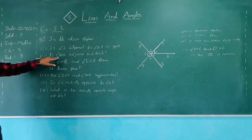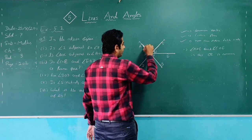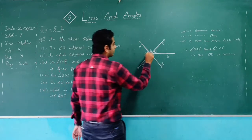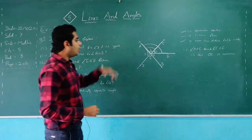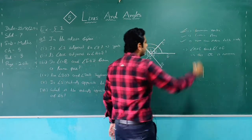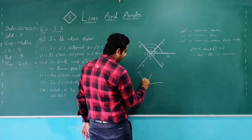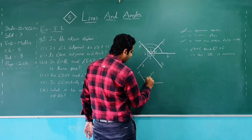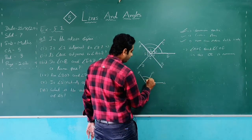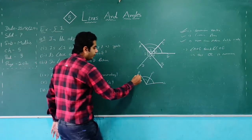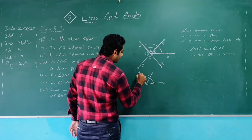Now the second sub-question: is AOC adjacent to AOE? The two angles are AOC and AOE. Checking the first condition — common vertex O is present in both. First condition fulfilled. Now AOC and AOE — which arm repeats in both? AO repeats, so AO is the common arm. Second condition also fulfilled.